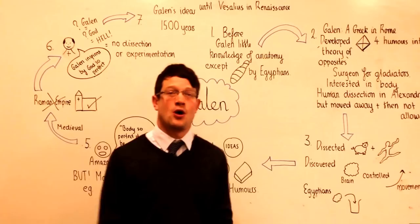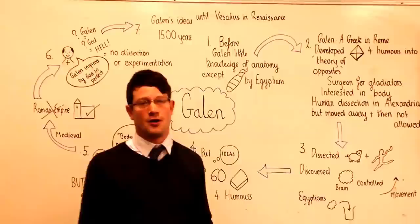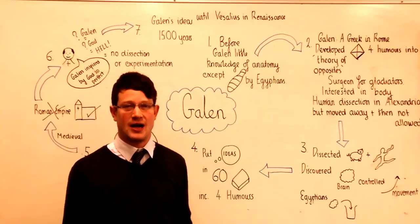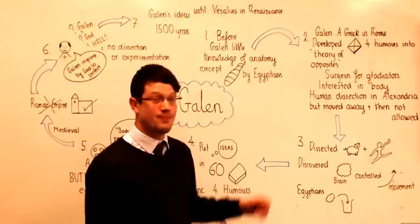Galen was a Greek who lived in Rome, and he developed Hippocrates' theory of the four humours into the theory of opposites. What that meant was that if you were too cold, you'd be encouraged to eat something hot. If your symptoms were a running nose, you'd be encouraged to eat something hot and dry to rebalance those.